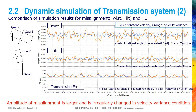This graph compares simulation results of misalignment and transmission error (TE). The x-axis is rotational angle of the countershaft and the y-axis is twist, tilt, and TE. Regarding twist and tilt, amplitude of misalignment in the velocity variance condition is larger than that in the constant velocity condition and is irregularly varying. As for TE, the two waveforms are mostly similar but amplitude in the velocity variance condition becomes partially larger. Because TE is one of the causes which excite vibration, not only steady state but also transient state should be considered when evaluating NV problems of a transmission system.